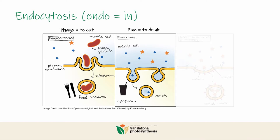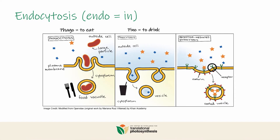Thirdly, we have receptor-mediated endocytosis. That's when the cell can be very picky about what's coming in, and a little receptor at the cell surface will bind to a specific cargo before engulfing it. Endocytosis is pretty cool and allows the cell to take in liquids or large solid cargo, and sometimes the cell can even be picky about the content of the cargo.